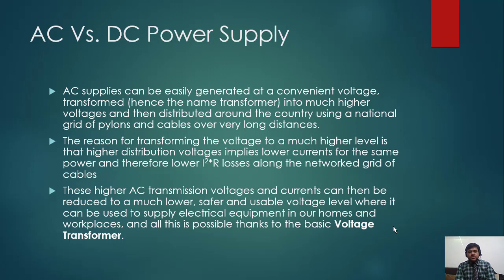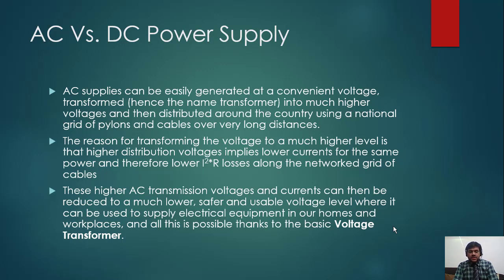Because most generation is through generators, AC voltage can be transformed - hence the name transformer - into much higher voltages and then distributed around the country using a national grid of pylons and cables over very long distances. So once alternating current is generated, it is stepped up, and after stepping up it is then transmitted.